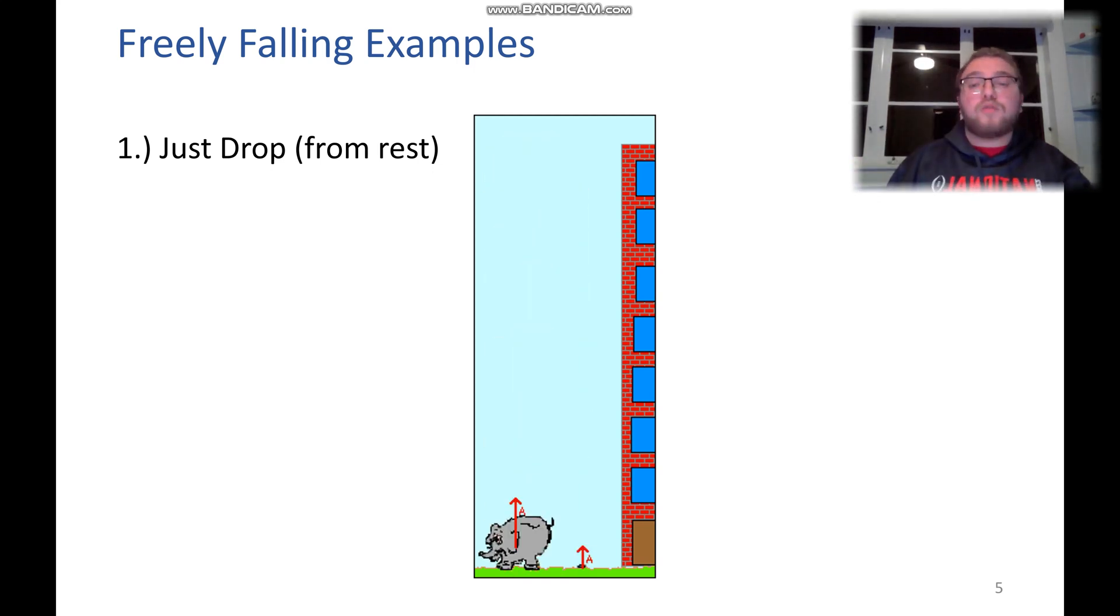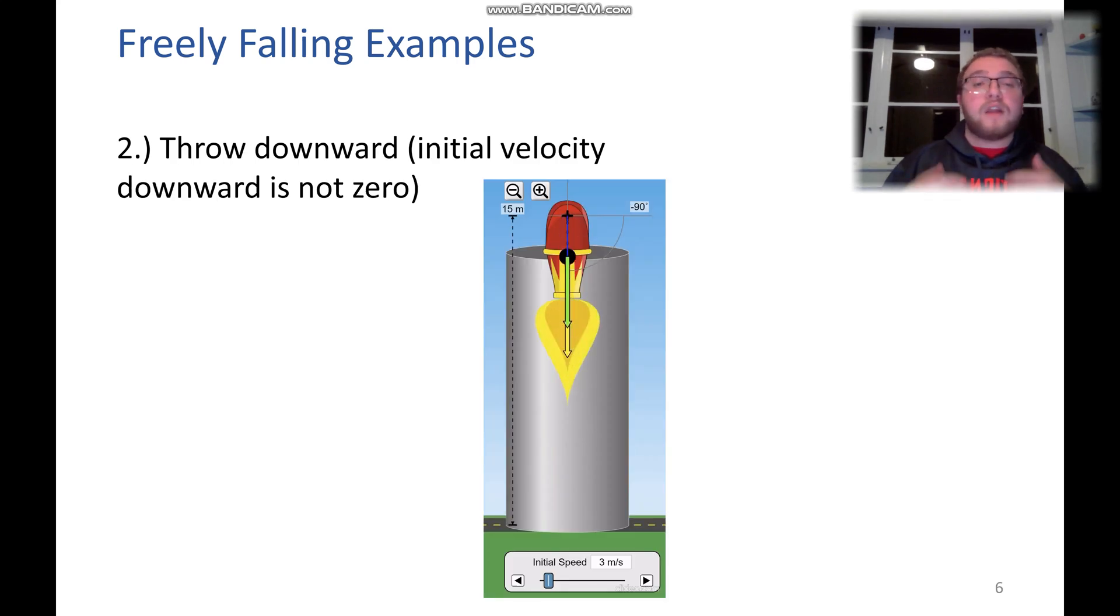The next example would be something having a non-zero initial velocity. So this cannon is shooting straight downwards and we know that it has an initial speed of 3 meters per second and we can see that our green velocity vector starts at 3 and then slowly grows as this object falls.